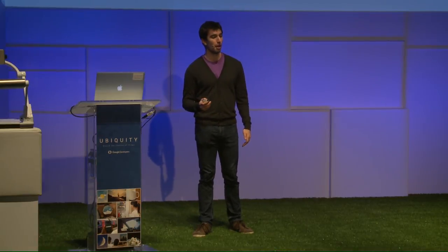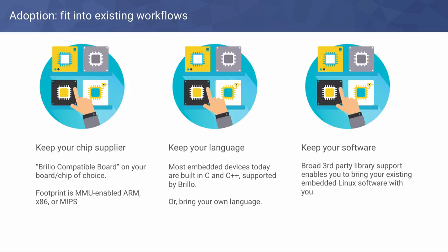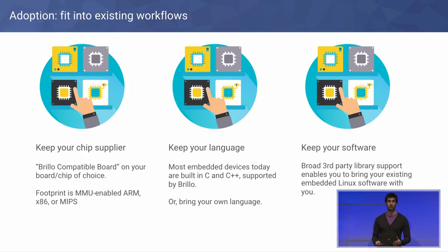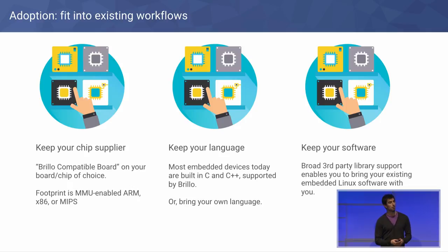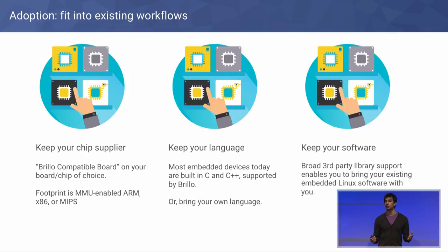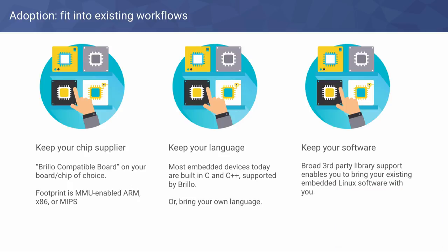It's also important to make sure the process of taking your existing work and bringing it to Brillo is easy. Because Brillo is Android-based, there's wide industry support, so you can likely keep your chip supplier. If you need to change hardware to make your device more effective or cheaper, that's easy too. Most embedded devices today are already built using C and C++, so you can likely keep your language as well. Because of the out-of-tree concept where all your code is in a separate tree, we won't get in your way if you want to use a different language. Brillo also has wide support for a large set of third-party libraries, making the process of bringing your code into the Brillo environment as easy as we can make it.